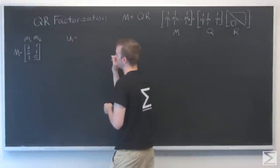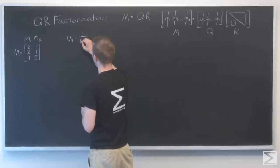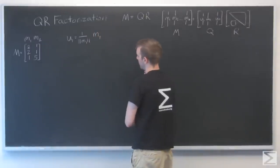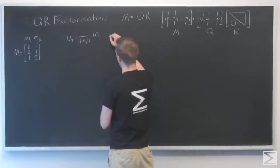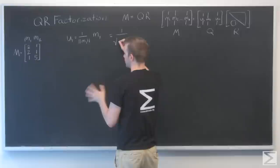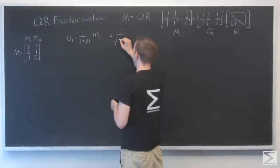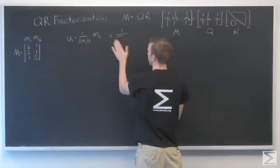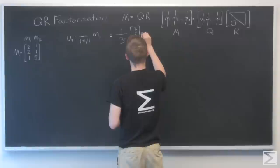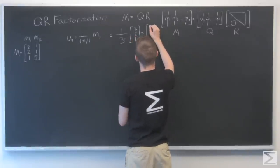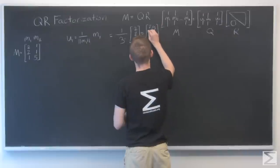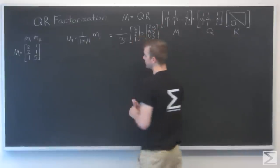Here's U1, and that's going to equal 1 over the length of m1 times m1 itself. 1 over, what's the length of this? That's the square root of 2 squared plus 2 squared plus 1, that's 4 plus 4 plus 1, that's 9. And the square root of 9 is just 3. So 2/3, 2/3, 1/3.